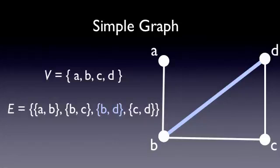Now, since this is a simple undirected graph, the pairs are unordered. So if we wanted to, we could have referred to the edge as D, B instead.